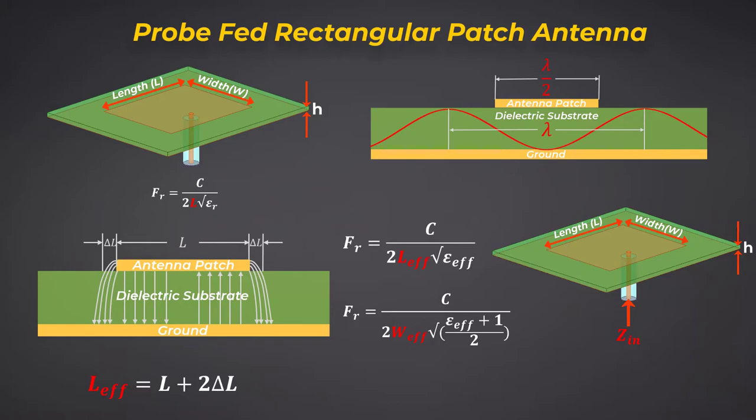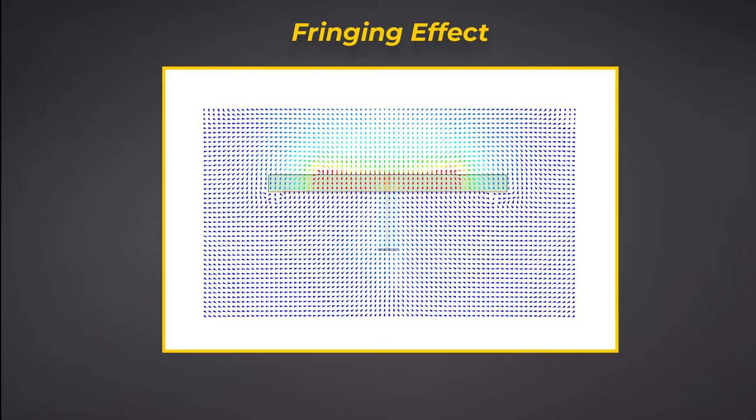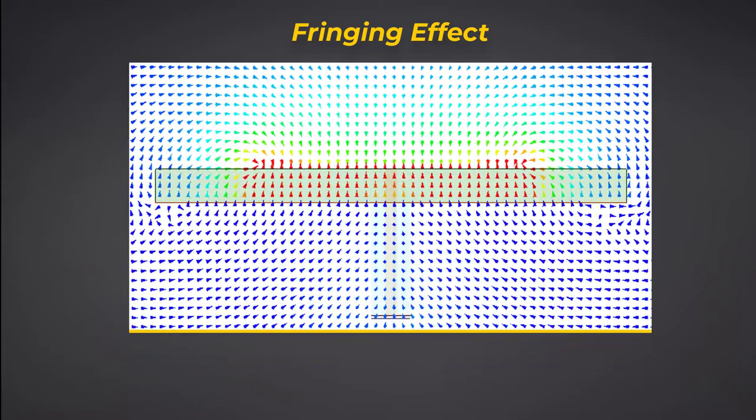So what exactly is that fringing field? The plots here are the vector plots that describe the electric field and the colors signify the magnitude. Red being a high intensity and blue being a lower intensity. Fields are not all directed normally between the conducting surfaces. Some fields are allowed to radiate outward in a fringing fashion.